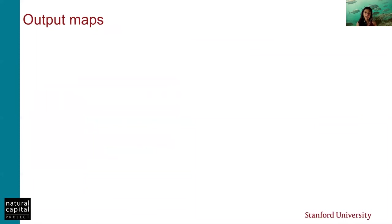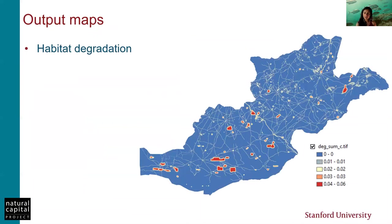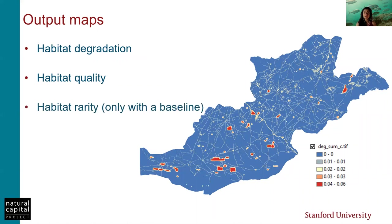The model gives us two to three key outputs. The first is the habitat degradation map, which also helps us set the half-saturation factor — for example, if the max value is 0.06, we should set the factor to 0.03 for the second run. The second key output is the habitat quality map, which ranges from zero to one because it is a relative ranking system. And lastly, if a baseline layer was included, we would also obtain a habitat rarity output. It is important to note that all values are relative to one another — we are not quantifying anything in absolute terms.